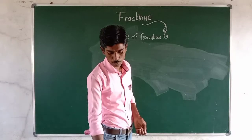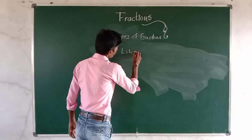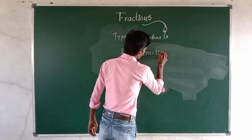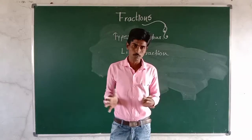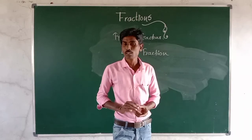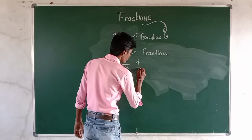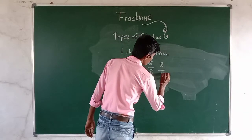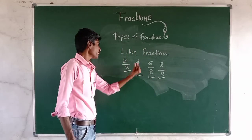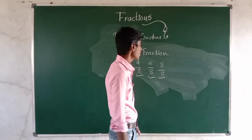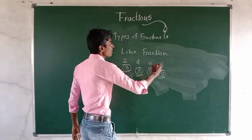Now there are more types of fractions: like fractions and unlike fractions. Like fractions are fractions which have the same denominator. For example, 2 by 8, 4 by 8, 6 by 8, and 8 by 8 — each fraction has the same denominator, which is 8. So all these fractions are called like fractions.